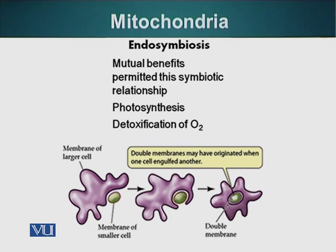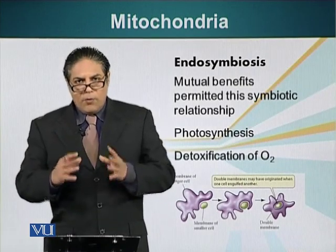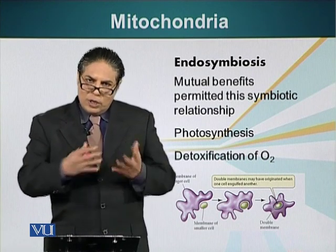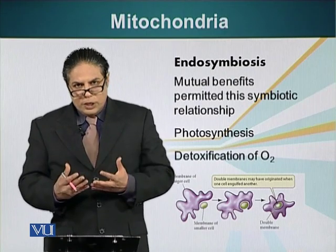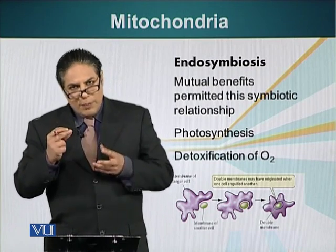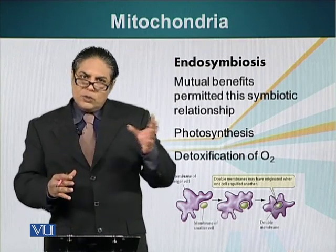Both cells gained advantage. The smaller cell, which became mitochondria, got the protection of the larger cell so that no other cells would eat it. The larger cell gained a specific advantage because back then the Earth's atmosphere was changing — there was more oxygen present. Oxygen is a toxic molecule, and mitochondrial enzymes can neutralize oxygen, which gave an advantage to the larger cell. So over the course of evolution, although mitochondria were independently living creatures — bacteria — over a period of time, their DNA shifted from the mitochondria to the cellular nucleus.